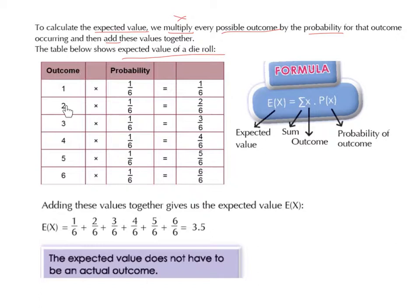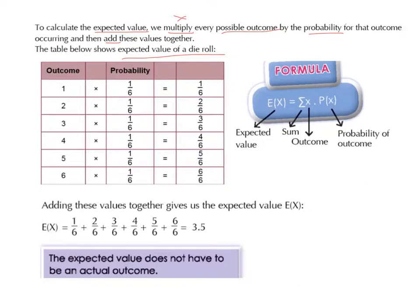The outcome is 2: 2 multiplied by 1 over 6 is 2 over 6. The outcome is 3: 3 multiplied by 1 over 6 is 3 over 6. The outcome is 4: 4 multiplied by 1 over 6 is 4 over 6. 5 multiplied by 1 over 6 is 5 over 6. 6 multiplied by 1 over 6 is 6 over 6.